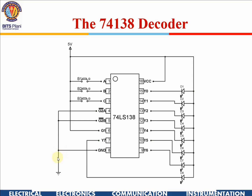Pin number 8 needs ground. To enable this chip, at pins 4 and 5 we need to give ground — these are chip enable bar pins. There are outputs Y0 through Y7, so there are eight outputs available. This IC has active low output.